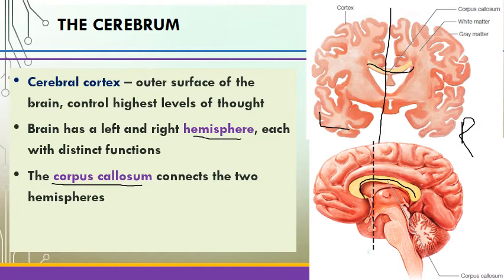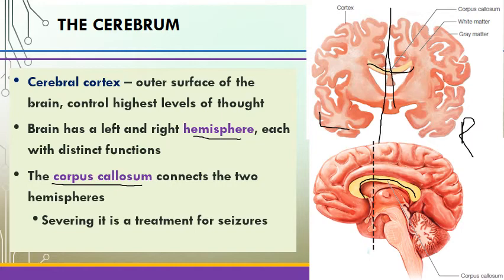The right side of the brain controls the left side of the body, and the left side of the brain controls the right side of the body — so they're cross-wired. We can see very interesting things that happen to people if you were to cut the corpus callosum. It essentially forms a split-brain person in which the left and the right don't communicate with each other. Why might you do that? If someone is suffering from epilepsy and has seizures that cross from one side to another, you might limit the severity of those seizures by cutting the corpus callosum.